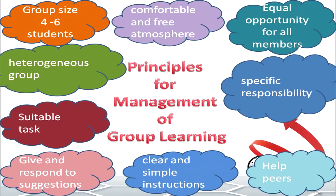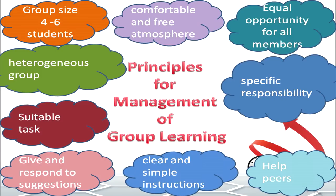To manage such a classroom, the principles for management of group learning are that the group size should be around 4–6 students and the group should be heterogeneous. A suitable task should be allotted according to the students' age and cognitive level. The teacher should provide a comfortable and free atmosphere, and all members should get equal opportunity with specific responsibilities laid out — such as making one member the group leader — so that nobody feels left out.